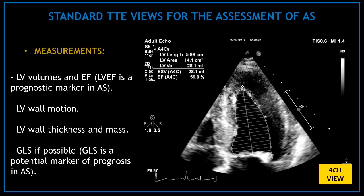Now move to the apical four-chamber view and perform a zoom view of the left ventricle. Measure the left ventricular volumes and ejection fraction, and visually assess the left ventricular wall motion. Measure the left ventricular wall thickness and mass. If possible, obtain the global longitudinal strain. Left ventricular ejection fraction and global longitudinal strain are prognostic markers in aortic stenosis.